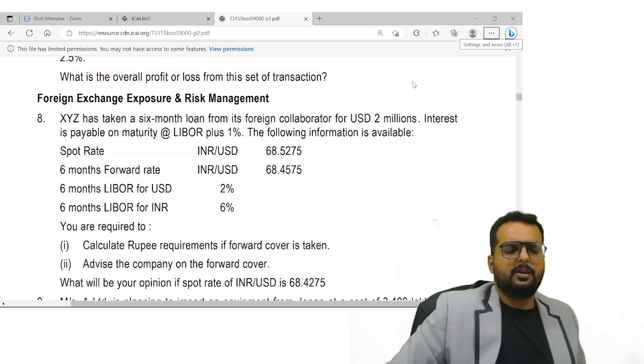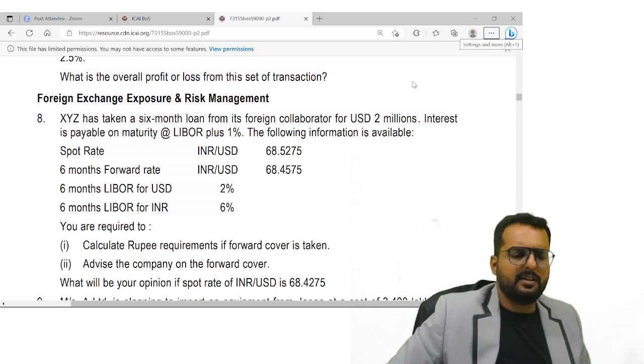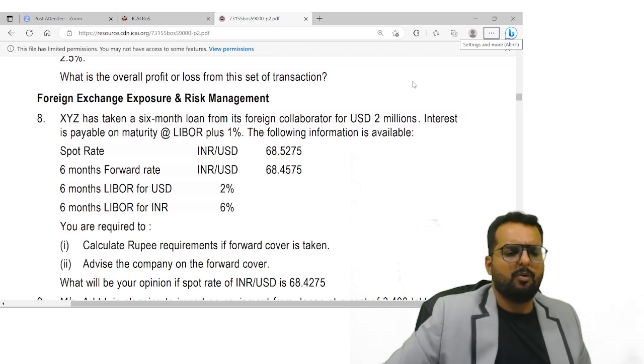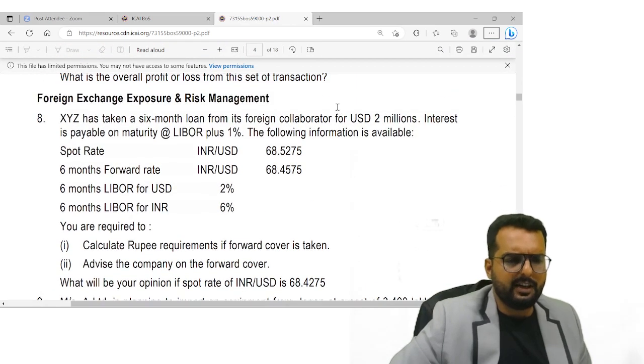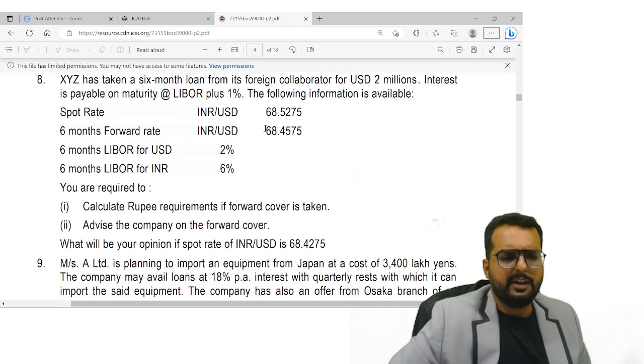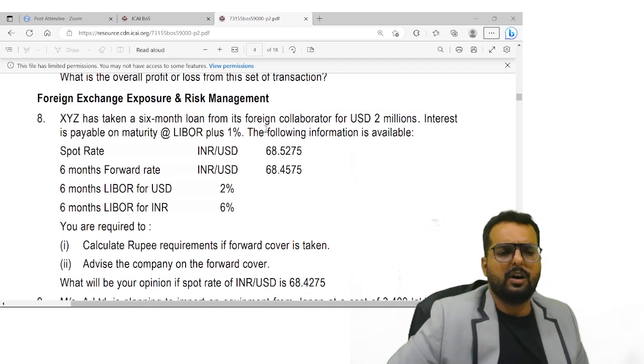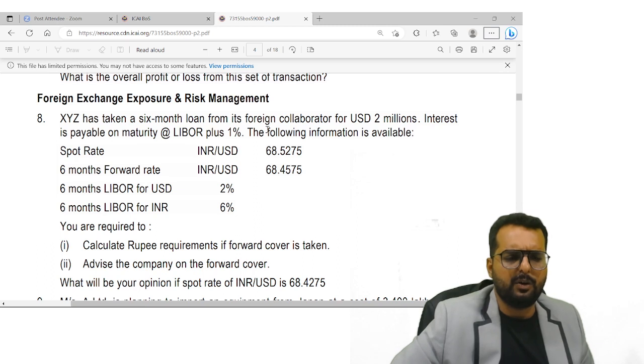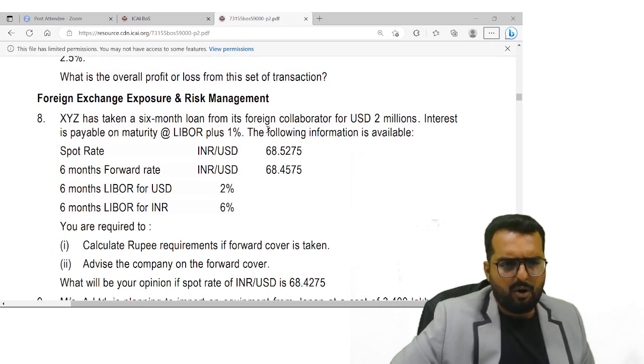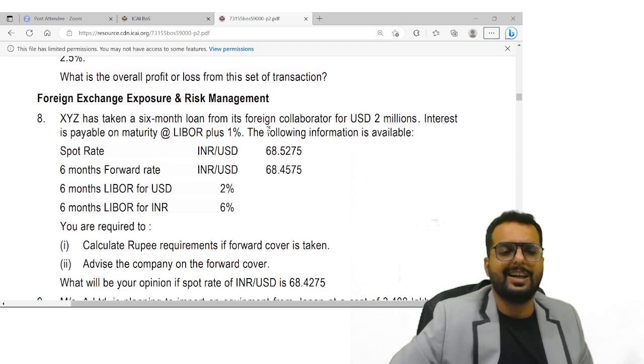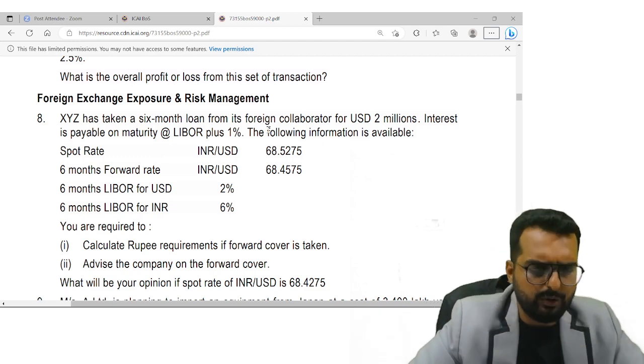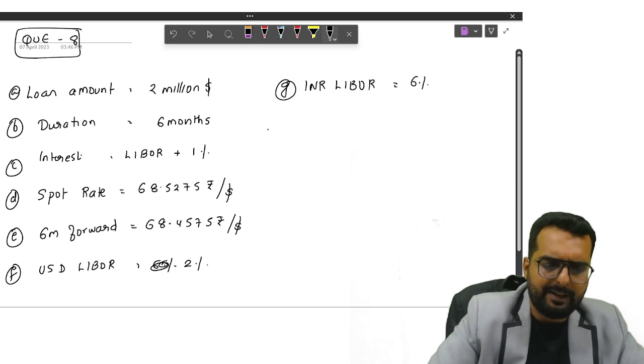Now they are asking calculate the rupee requirement if the forward cover is taken. Advise the company on its forward cover. So they are saying whether they should take forward cover, yes or no. Right now whatever loan they have, they can continue in USD and repay after six months. Or option two, they can repay the loan now and take another loan in the Indian base. I'll show you this one by one. This was the basic data.